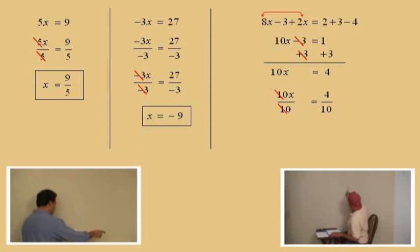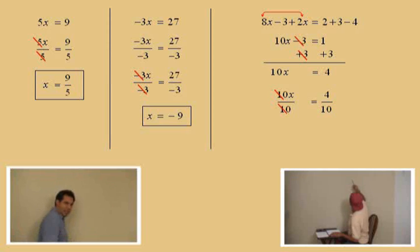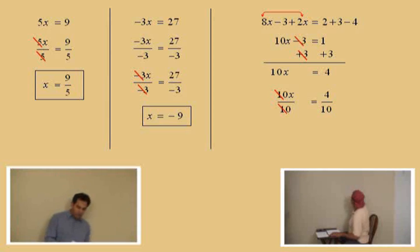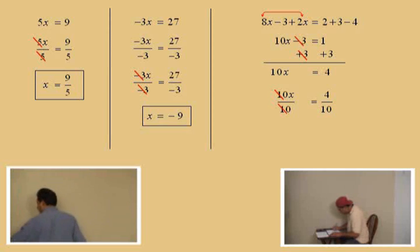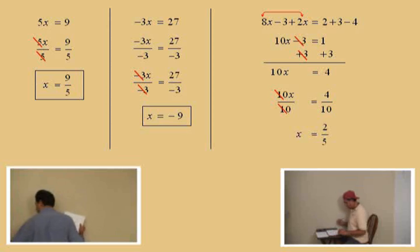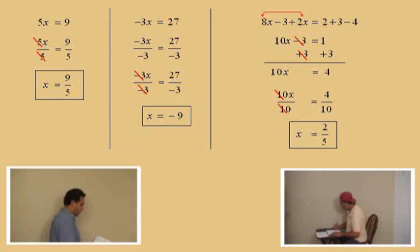Four tenths reduces — remember we're the big time now. How does four tenths reduce? It reduces to two fifths. Okay, so our answer is x equals two fifths. Don't forget to box your answer.